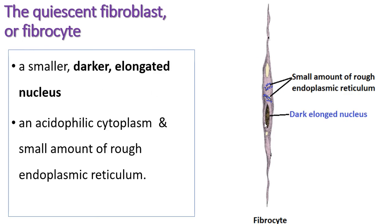The fibrocyte contains a dark, elongated nucleus, indicating its inactivity, because its nucleus is rich in heterochromatin. Heterochromatin has the ability to stain with H&E staining, so the dark nuclei indicate that this cell is inactive. It also contains only a small amount of rough endoplasmic reticulum.